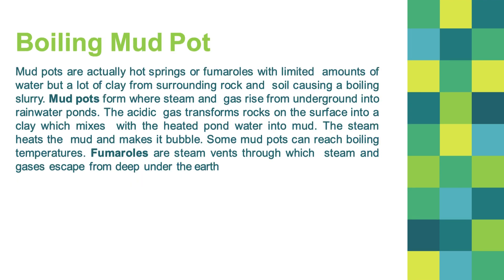Boiling mud pots are hot springs or fumaroles with limited amounts of water but a lot of clay from surrounding rock and soil, causing a boiling slurry. Mud pots form where steam and gas rise from underground into rainwater ponds; the acidic gas transforms rocks on the surface into clay, which mixes with heated pond water into mud. The steam heats the mud and makes it bubble, and some mud pots can reach boiling temperatures. Fumaroles are steam vents through which steam and gases escape from deep under the earth.